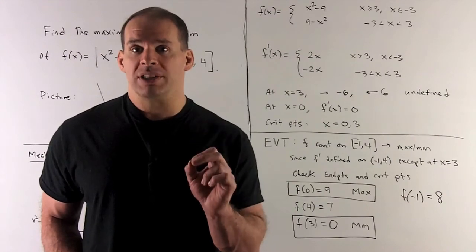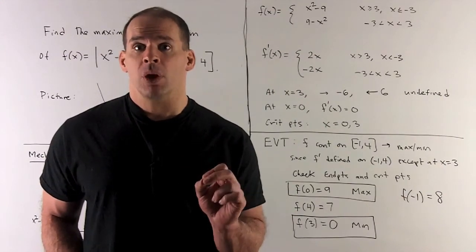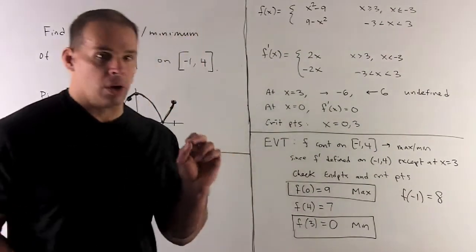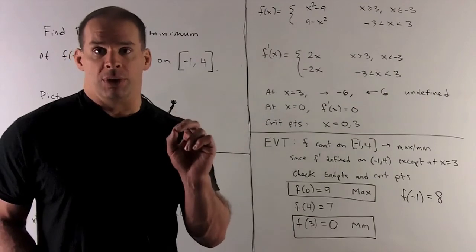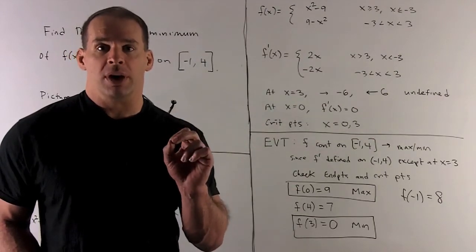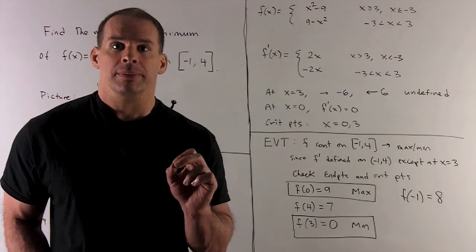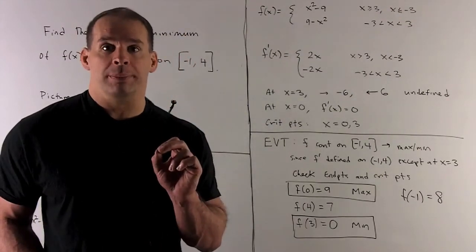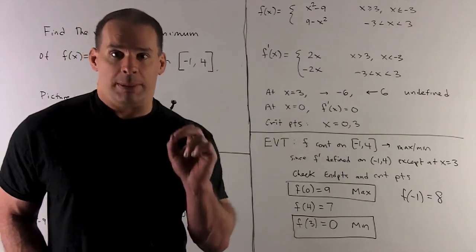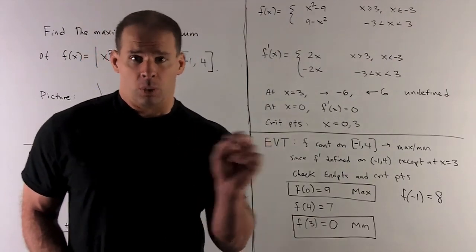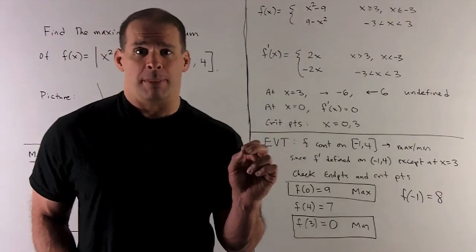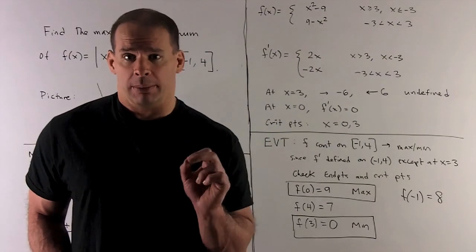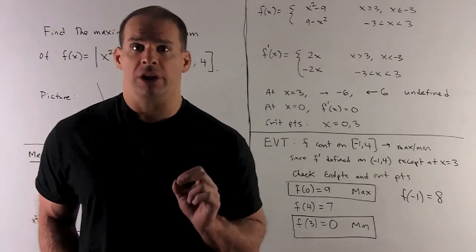We also include the endpoints x = -1 and x = 4, and apply f to all those points. Evaluating: f(0) = 9, which is the maximum. f(3) = 0, which is the minimum. The endpoints are not needed for the maximum or minimum in this case. This is how we find maxima and minima when there's an absolute value around our function.